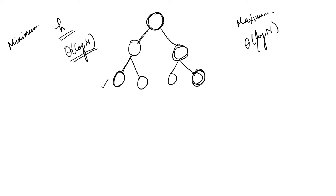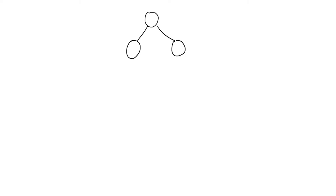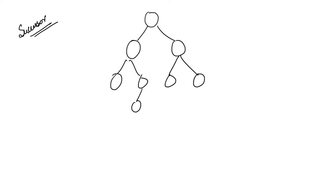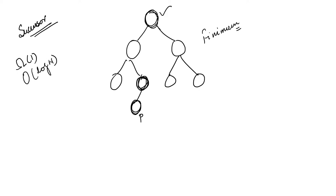We are discussing all these things with respect to the balanced binary search tree. For the successor operation, if we are finding the successor of a node P that has a direct successor, we can find it in O(1) time. But if we have to find the successor of the root node, we go to the right and find the minimum, which requires traversing from the root to the extreme left element on the right side — O(log n) effort.